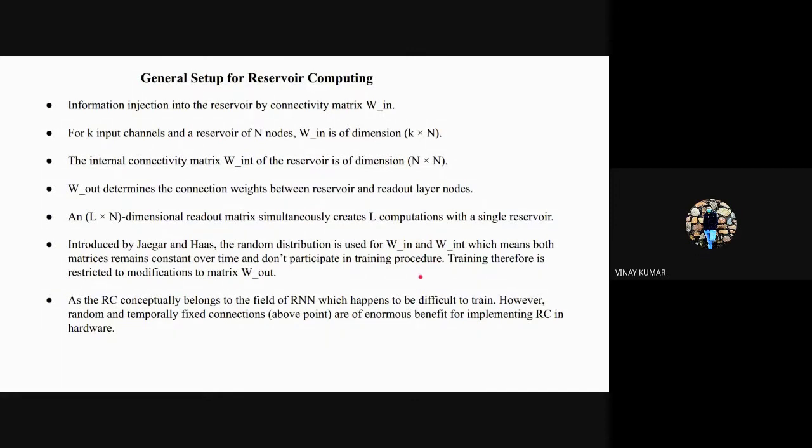The only training is done to modify W_output. These metrics are randomly selected and W_output matrix produces the output. RC belongs to recurrent neural networks which are very difficult to train, so this reservoir computing has an advantage over RNN that these are fixed.